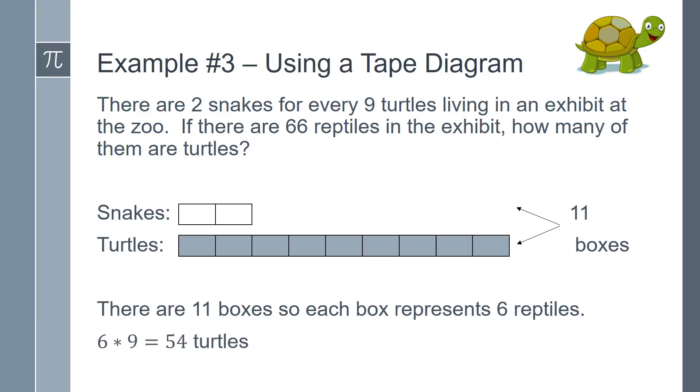6 times 9 equals 54. So the zoo exhibit contains 54 turtles.